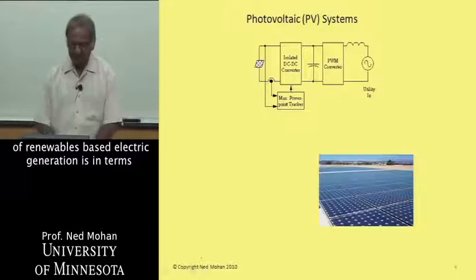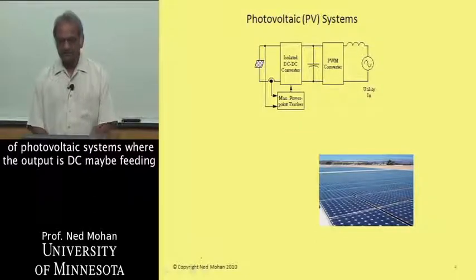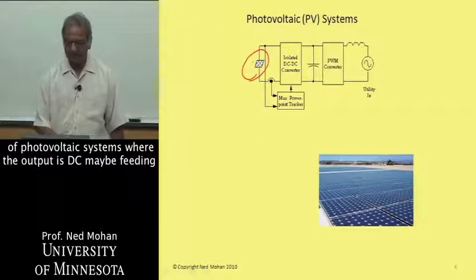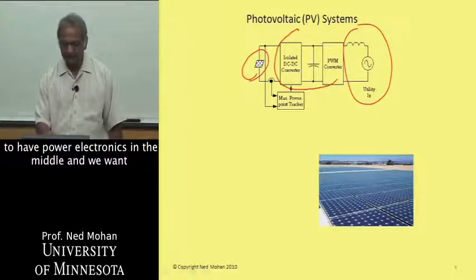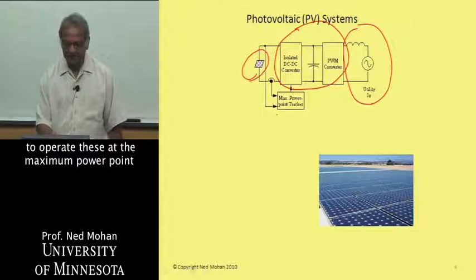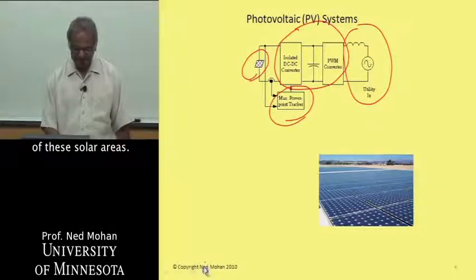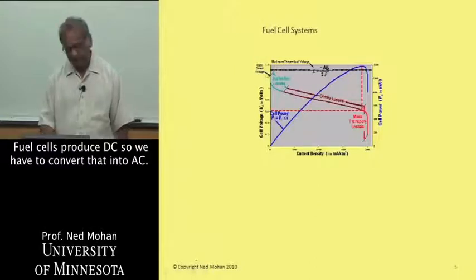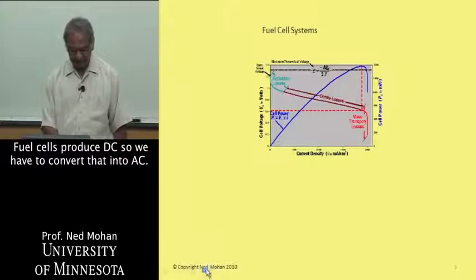Another big example of renewables-based electric generation is photovoltaic systems, where the output is DC. Whether feeding into single phase or three phase, you need power electronics in the middle, and we want to operate these at the maximum power point. Fuel cells also produce DC, which must be converted to AC.